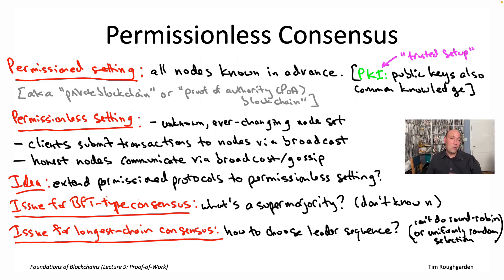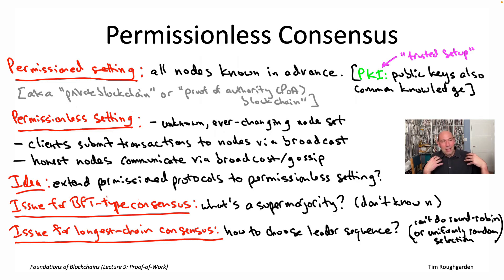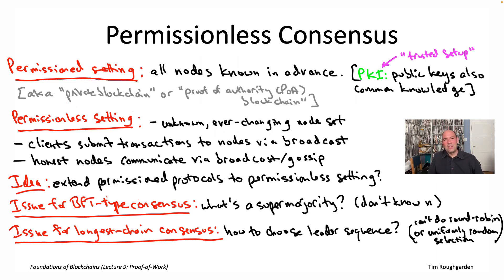Meanwhile, in lecture eight, we studied a very different style of consensus: longest chain consensus. Here there's very little coordination among nodes. Any node that's a leader of a round can unilaterally propose whatever block it wants and name whatever predecessor it wants. Given that freedom, you have to be ready to deal with forks. The way forks are resolved is that only the longest chain counts — blocks on the longest chain are considered finalized, except for the last K blocks where K is some security parameter.